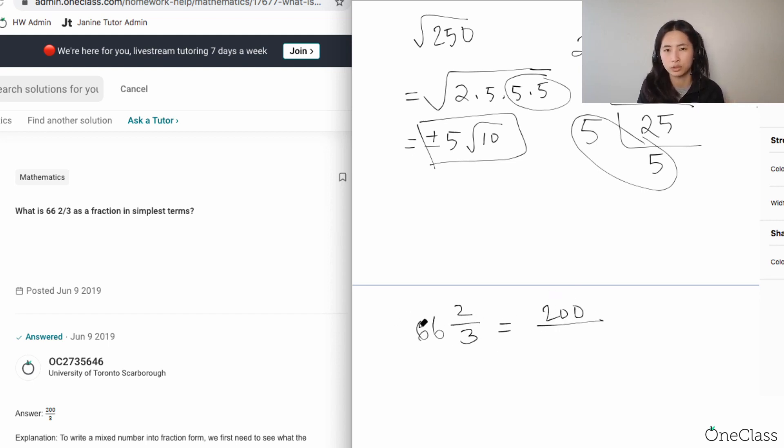How do I get 200? I multiply 3 times the whole number 66, plus 2, I get 200. That's my new numerator. For the denominator, whatever is coming from the mixed number stays the same, so it's 200 over 3.